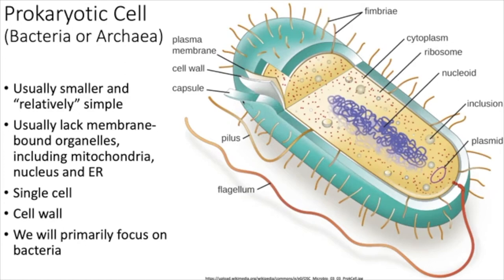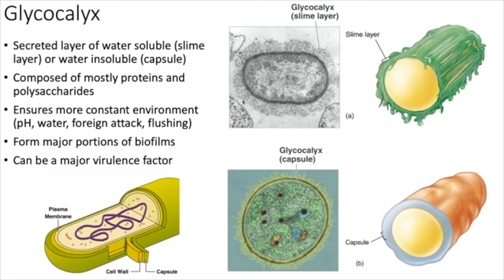Something else we see for motility is the axial filament, or endoflagellum. Unlike a regular flagellum that sticks off the side, an endoflagellum travels along the bacteria itself, giving it a snake-like spirochete appearance. We see this in Borrelia burgdorferi — which causes Lyme disease — and Treponema pallidum, which causes syphilis. They use this spiral motion to essentially dig their way into cells.